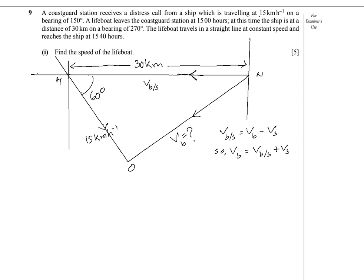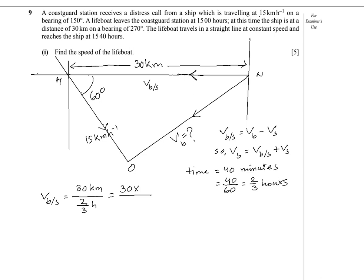Let's calculate the time again. We know that the boat reaches the ship within 40 minutes, so T equals 40 minutes, which is 2 over 3 hours. Now let's find the magnitude of this relative velocity. This velocity will cover 30 kilometres within 2 over 3 hours, so it will be 30 divided by 2 over 3, which equals 30 times 3 divided by 2 km per hour. 30 divided by 2 is 15, and 15 times 3 is 45 km per hour.